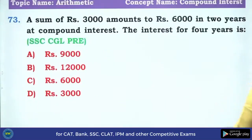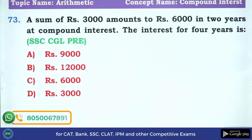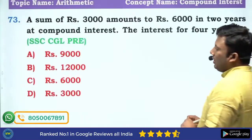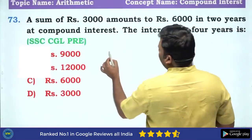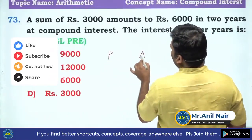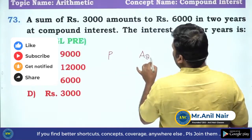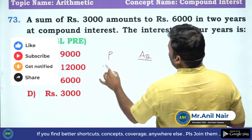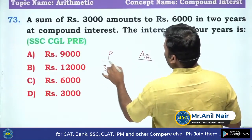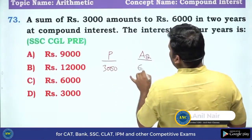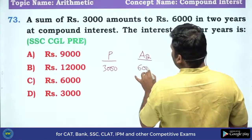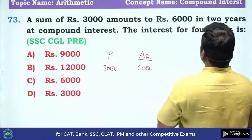Very interesting question. A sum of rupees 3,000 amounts to 6,000 in 2 years. So P is 3,000 and A2 is 6,000 — meaning 3,000 is becoming 6,000 in 2 years.